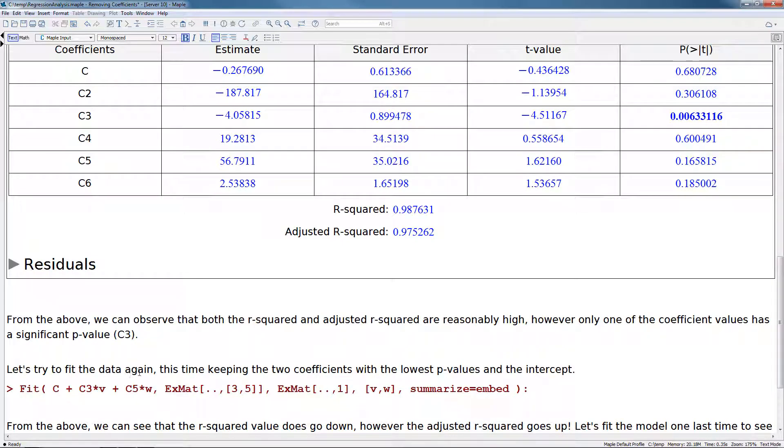So let's try to fit the data again. And this time, we're going to keep only the two coefficients with the lowest P values and the intercept. So from above, we saw that C3 was certainly the lowest of the coefficient for P values. But we'll also grab C5 as it has a fairly low P value.